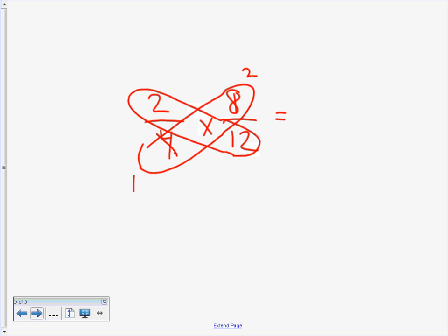Same thing here. What goes into 2 and 12? 2 goes into itself once. 2 divided by 2 is 1. And 2 goes into 12 six times. Now we just have to multiply. 1 times 2 is 2. 1 times 6 is 6.